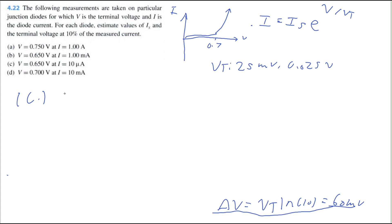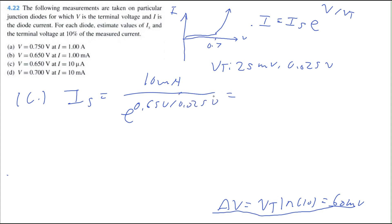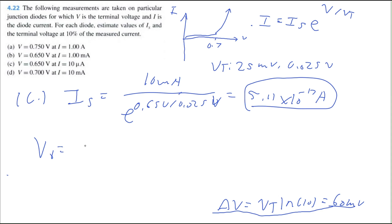Let's carry on with part C. V equals 0.65 volts and I equals 10 microamps. Using the same formula, IS equals 10 microamps divided by e to the power of 0.65 volts divided by 0.025 volts, which equals 5.11 times 10 to the negative 17 amps. Then the new voltage V0 equals the original voltage 0.65 volts minus ΔV of 60 millivolts, which equals 0.59 volts.